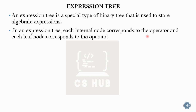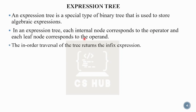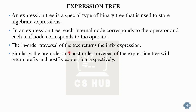The leaf nodes are the operands — variables — and the internal nodes are all operators. Tree traversal gives three expressions: inorder traversal gives an infix expression, pre-order traversal returns a prefix expression, and post-order traversal returns a postfix expression.